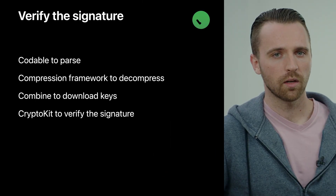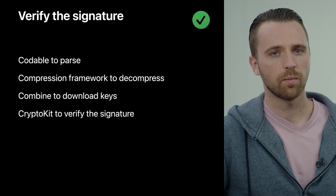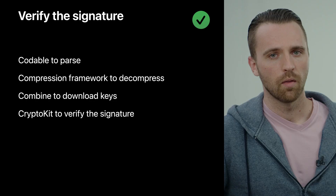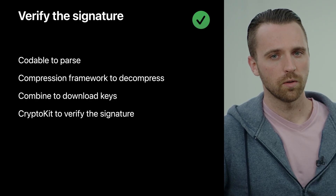Now that you've retrieved a piece of signed clinical data, you can write some code to verify its signature within your app. Digital signatures are a mathematical way to verify the authenticity of digital information. This process may be performed by any device such as a server or another mobile device. You can accomplish this using four main steps: first, parse the clinical data using a Codable; second, decompress the signed JSON Web Token payload; third, download the issuer's public key from their website; and finally, use CryptoKit to verify the signature.